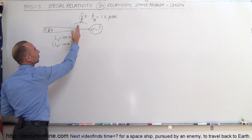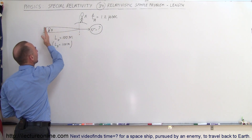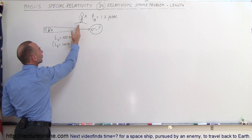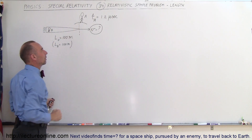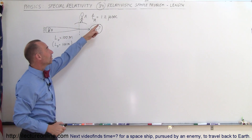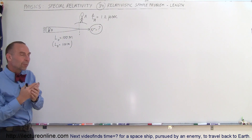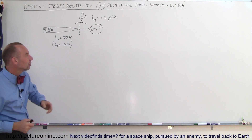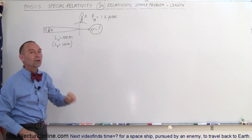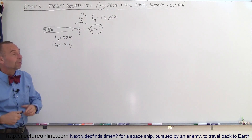We start the stopwatch when the spaceship reaches this point and stop it when the end of the spaceship has passed. Observer A measures that time as 1.2 microseconds. So based on that information, can we figure out the velocity at which the spaceship is moving? The answer is yes, we should be able to.